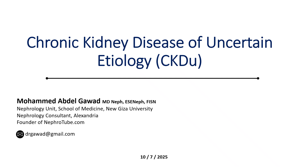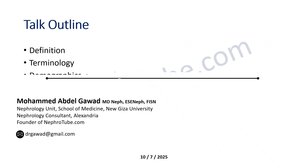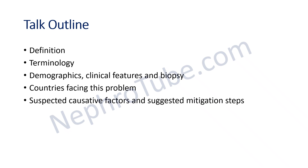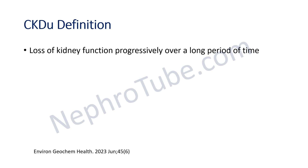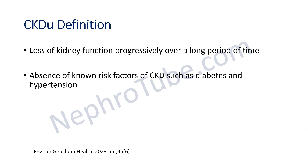Welcome to this online nephrology lecture about chronic kidney disease of uncertain etiology, abbreviated as CKDU. CKDU is defined as loss of kidney function progressively over a long period of time — as with any chronic kidney disease — but in the absence of known risk factors of chronic kidney disease, especially diabetes and hypertension.